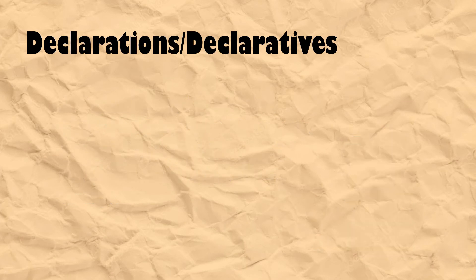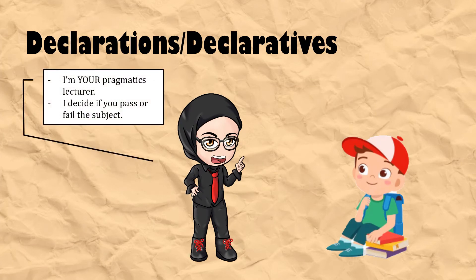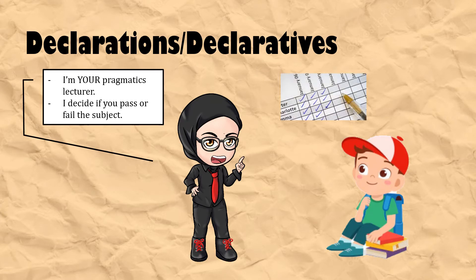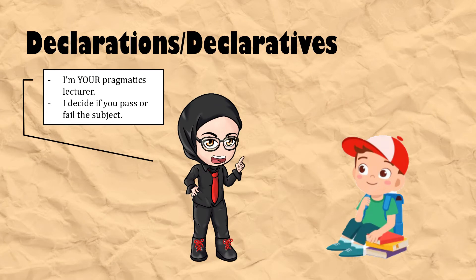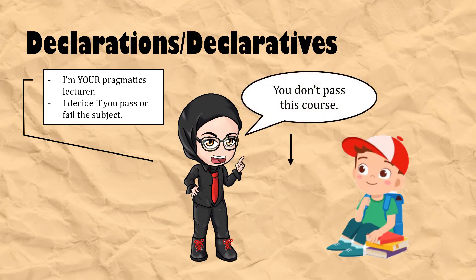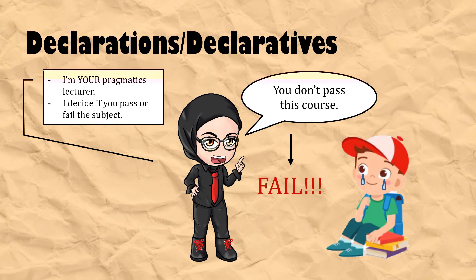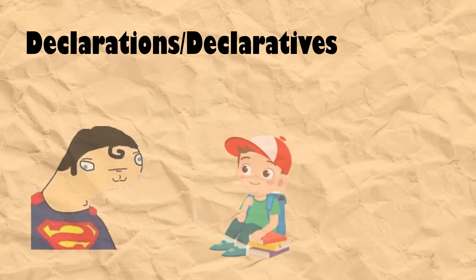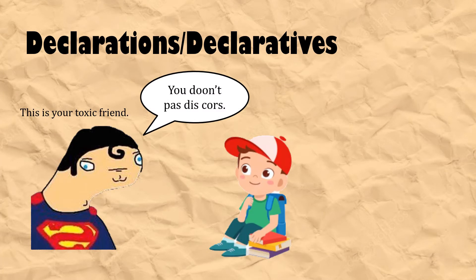Let me give you an illustration. I am your pragmatics lecturer — I'm the one who gets to decide whether you pass or fail the class. I notice that you only come to my class three times and you never complete your assignments. Therefore, if I say 'you don't pass this course,' this means that you fail pragmatics class. That's the change to the situation — the failure is the change. It's a different meaning when the utterance 'you don't pass this course' is said by your friend. Who's he to decide your fate?